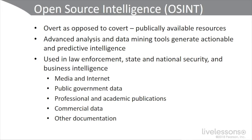The first thing I want to talk about is open source intelligence, OSINT. This is basically agencies of the U.S. government, including the CIA and others, that are doing overt as opposed to covert intelligence by basically data mining publicly available resources. They're doing advanced analysis, data mining tools, generating actionable and predictive intelligence. It's used in law enforcement, homeland security, state and national security, as well as business intelligence.